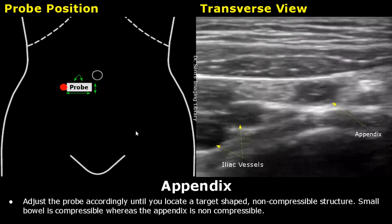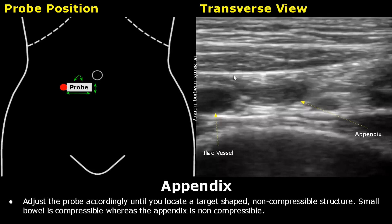Adjust the probe accordingly near the umbilicus until you find a target-shaped, non-compressible structure — this will be the appendix. The appendix can be distinguished from the small bowel by compressibility; the small bowel is compressible when we apply probe pressure. The appendix gives a target sign appearance in transverse view. With slight adjustment of the probe, we can see the tubular shape of the appendix right here, near the iliac vessel.